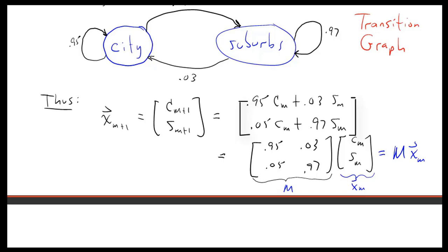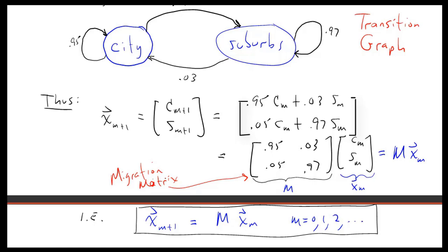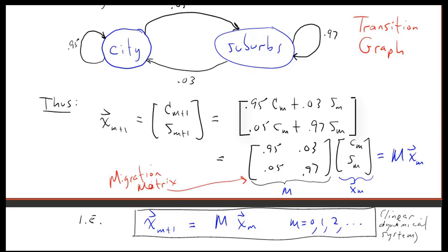So this whole multiplication can be written as M·x_M. In other words, x_{M+1} = M·x_M, where M ranges from 0, 1, 2, 3, and so forth. The matrix M is called the migration matrix because it carries all information about the migration of populations between the city and the suburbs. Now that we know matrix M, this equation completely defines our linear dynamical system.